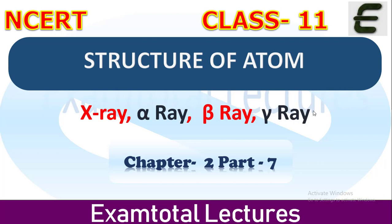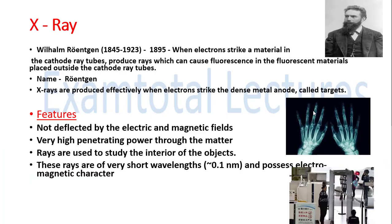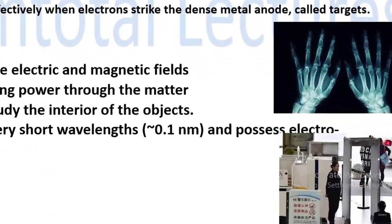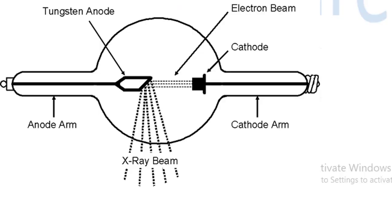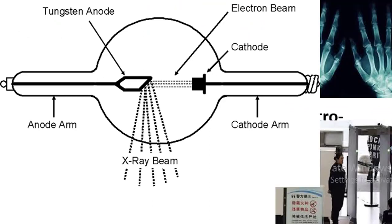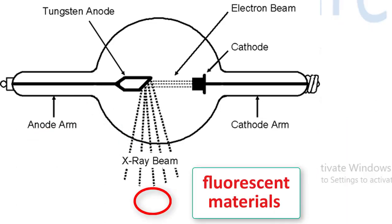Later in the 19th century, different kinds of rays were discovered, and one of them was the X-ray. X-rays were discovered by Wilhelm Röntgen in 1895. What he did was he placed a fluorescent material outside the cathode ray tube — when electrons strike the material inside the cathode ray tube, it caused fluorescence in the fluorescent material placed outside.